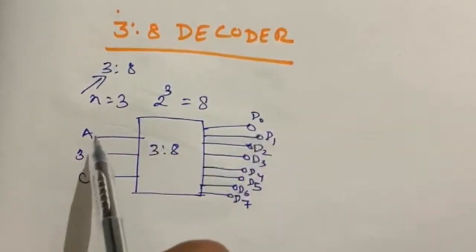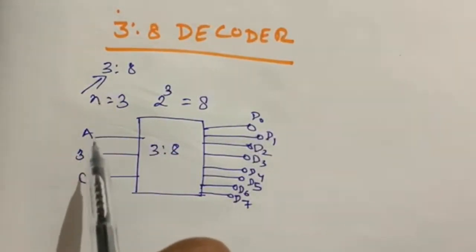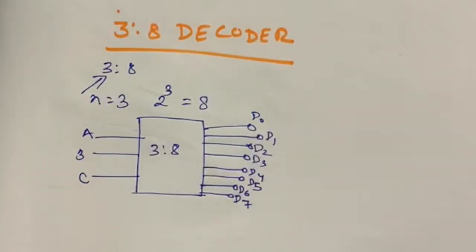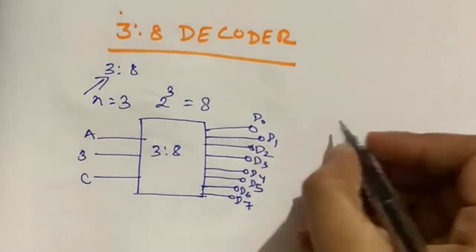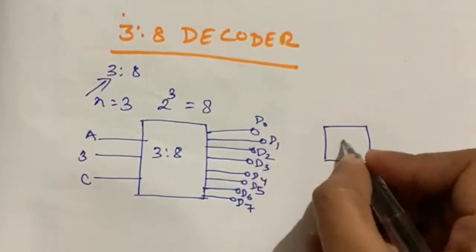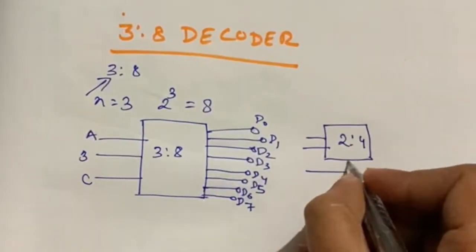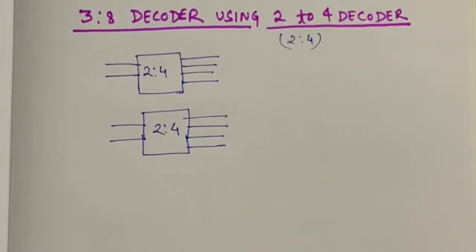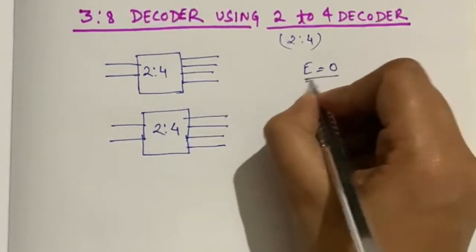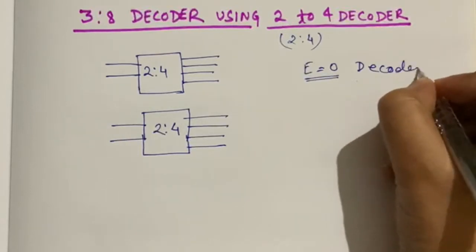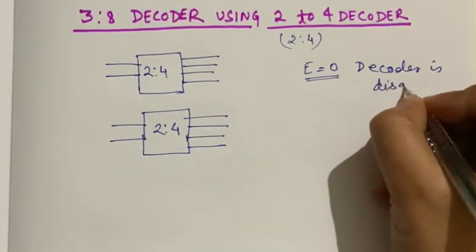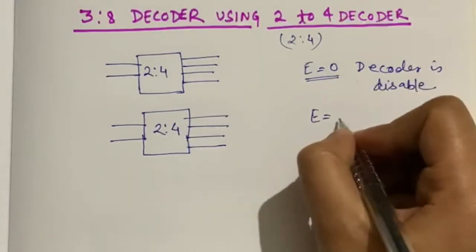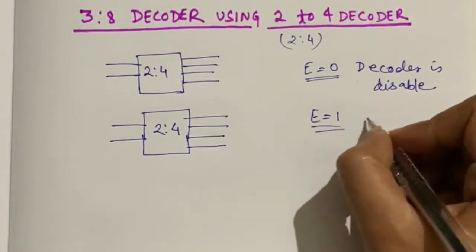For a 3-to-8 decoder we need 3 input lines, so we use two 2-to-4 decoders with enable. When the value of enable equals 0, the decoder is disabled — it will not work. When the value of enable is 1, the decoder is active.